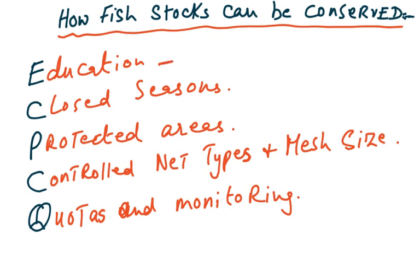Number one: education of fish farmers, who should not deplete the younger, smaller fish. Then closed seasons: the government legally enforces that from one time of year to another, there will be no fishing. Violators should be prosecuted, imprisoned, and fined so they do not take out fishing boats. Closed seasons exist during times when fish are breeding — we don't want to catch fish during their breeding season. Then protected areas: some areas will have no fishing allowed.